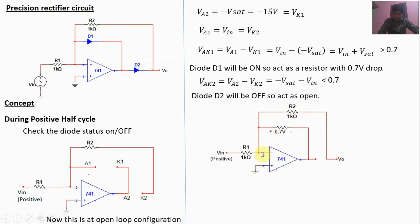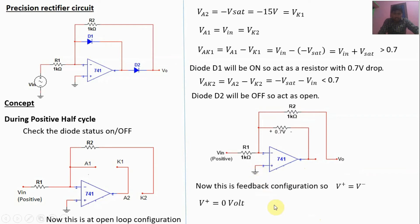Since this is a feedback configuration, V-plus equals V-minus. V-plus is connected to ground, so V-plus equals 0 volts, and therefore V-minus equals 0 volts. The output terminal is connected through D1, and since there is no current flow through R2, there is no voltage drop across R2. Therefore the output V-out for the positive half cycle is 0 volts.